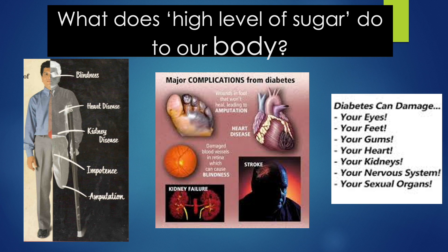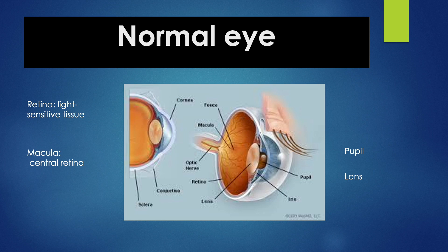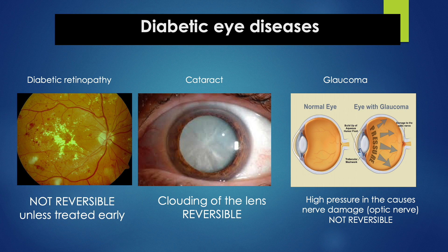This is the anatomy of a normal eye. The eye is like an old camera which consists of a lens and film. The retina represents the film in an old camera. Diabetes can affect almost every structure in the eye.